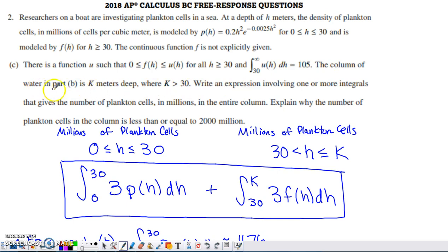So if you read this next sentence, it tells us that the column of water that we were talking about in part B is actually k meters deep, and k is going to exceed 30. So this density function only holds when the depth of the water is between 0 and 30.